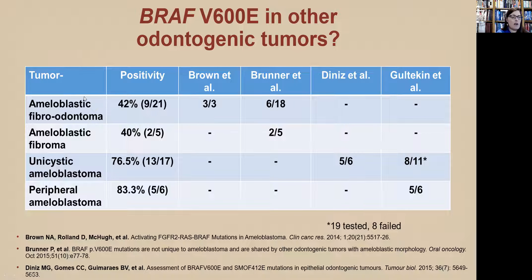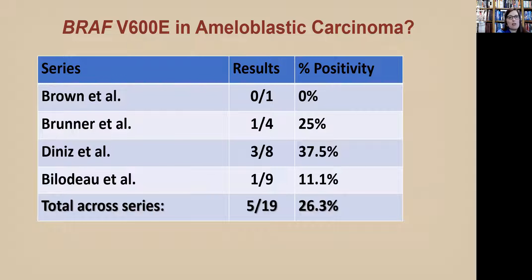About 40% of ameloblastic fibro-odontomas and ameloblastic fibromas have BRAF mutations. Unicystic and peripheral ameloblastomas have similar rates of BRAF mutations as conventional solid multicystic ameloblastomas. Regarding ameloblastic carcinoma, our ameloblastic carcinomas have a much lower rate of BRAF mutations — something else appears to be driving those malignancies. This makes sense, because BRAF mutations are actually associated with a better prognosis in ameloblastoma.